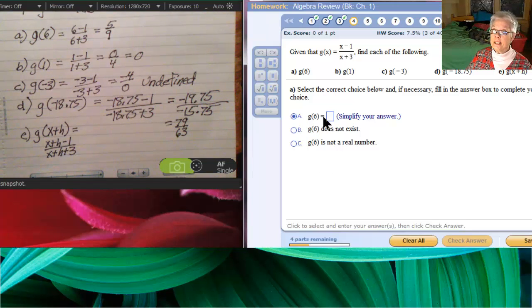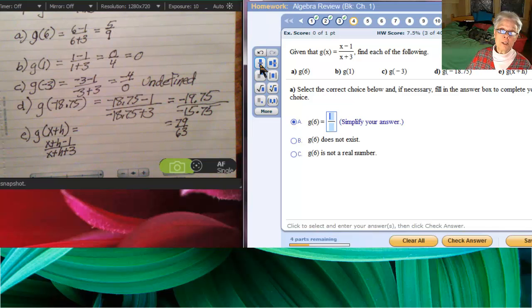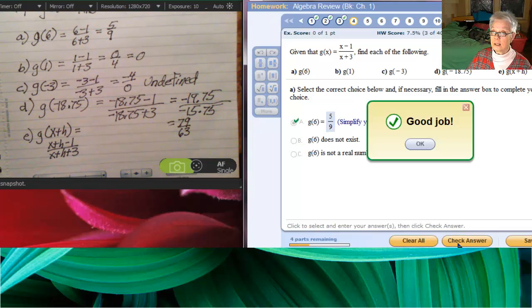g of 6 is 5 ninths, so be sure to use the fraction tool. It makes life a little easier. Check answer. We're right.